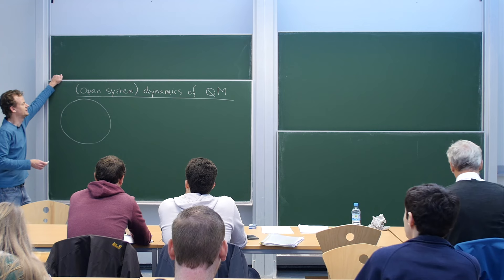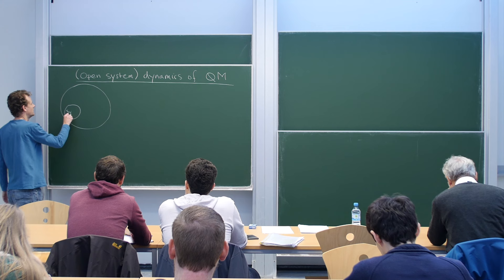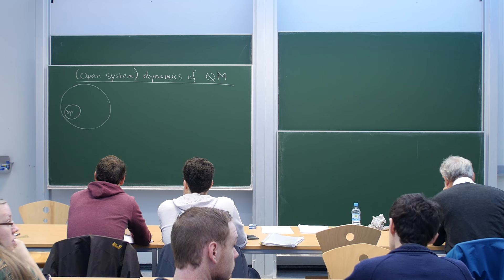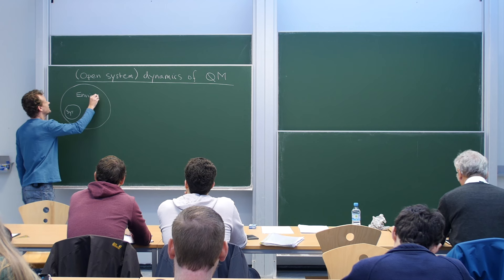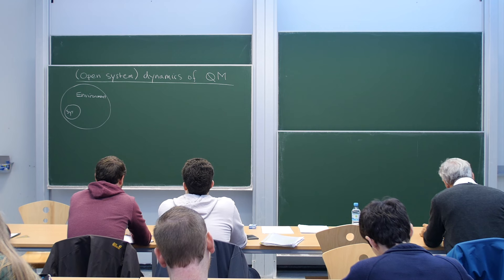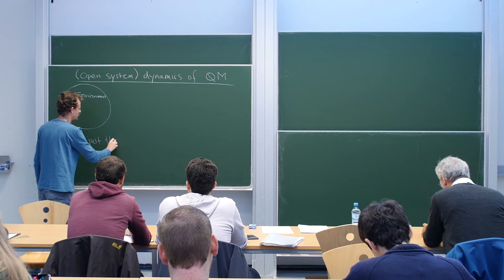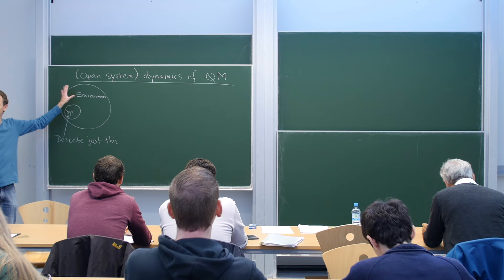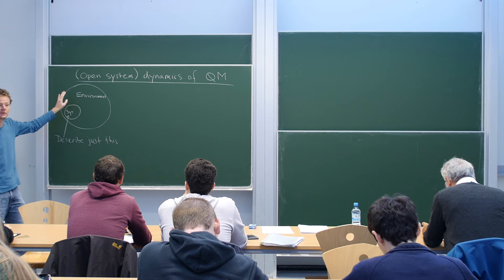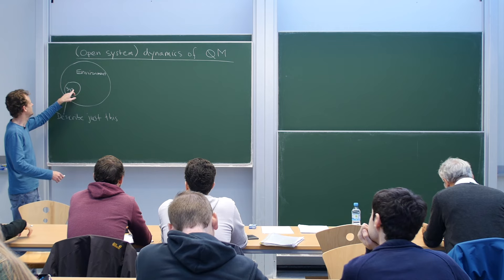This is the picture I will draw throughout this course. You have some system under your control, and you have the rest of the universe, which is some kind of environment. Our task is to describe just this small part: how does this small part of a bigger quantum system behave as time passes? We can model every experiment in this way.